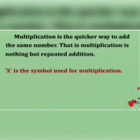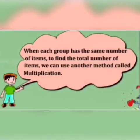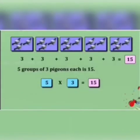Now let us see what multiplication is. Multiplication is the quicker way to add the same number — that is, multiplication is nothing but repeated addition. The symbol used for multiplication is 'into'. When each group has the same number of items, to find the total number of items, we can use this method called multiplication.